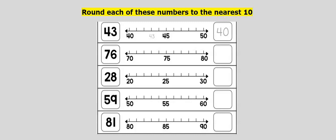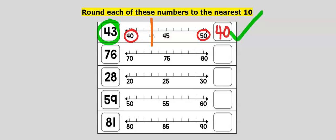Let's consider 43. 43 is between 40 and 50. 43 is closer to 40 than to 50. Hence, our answer is 40.